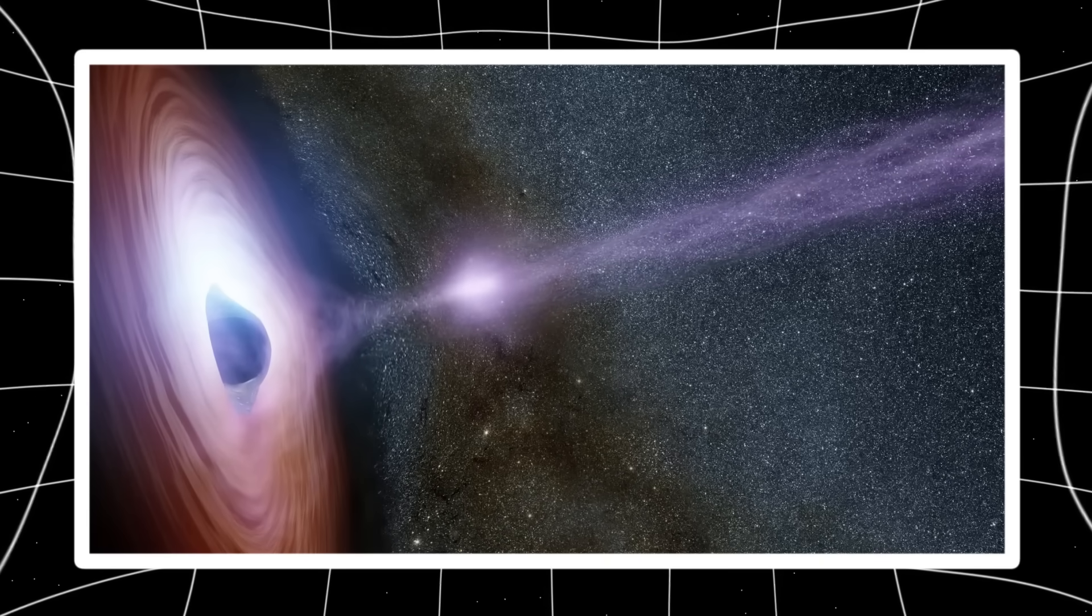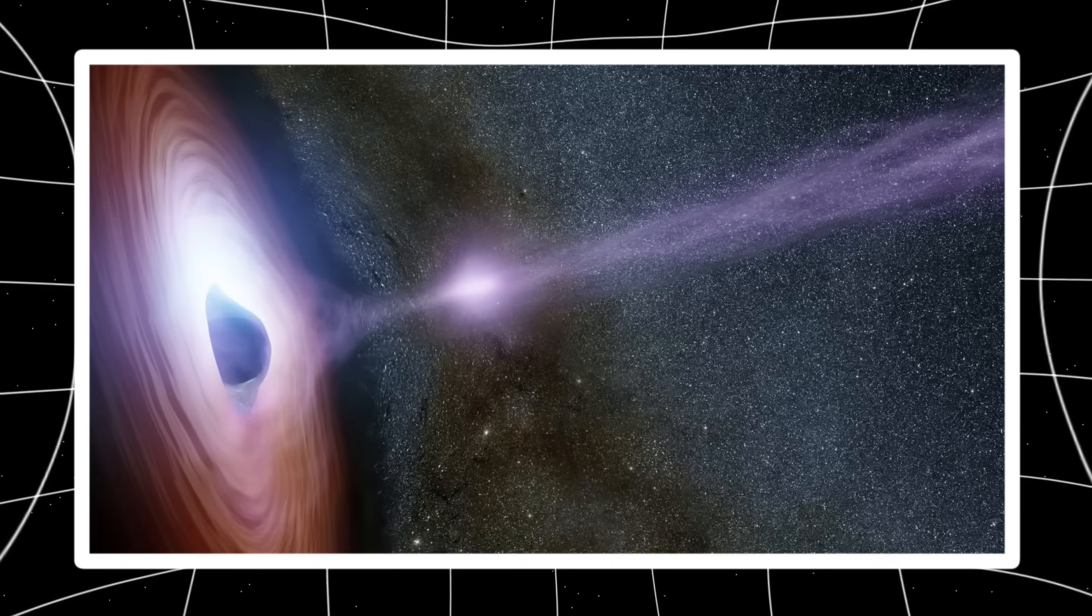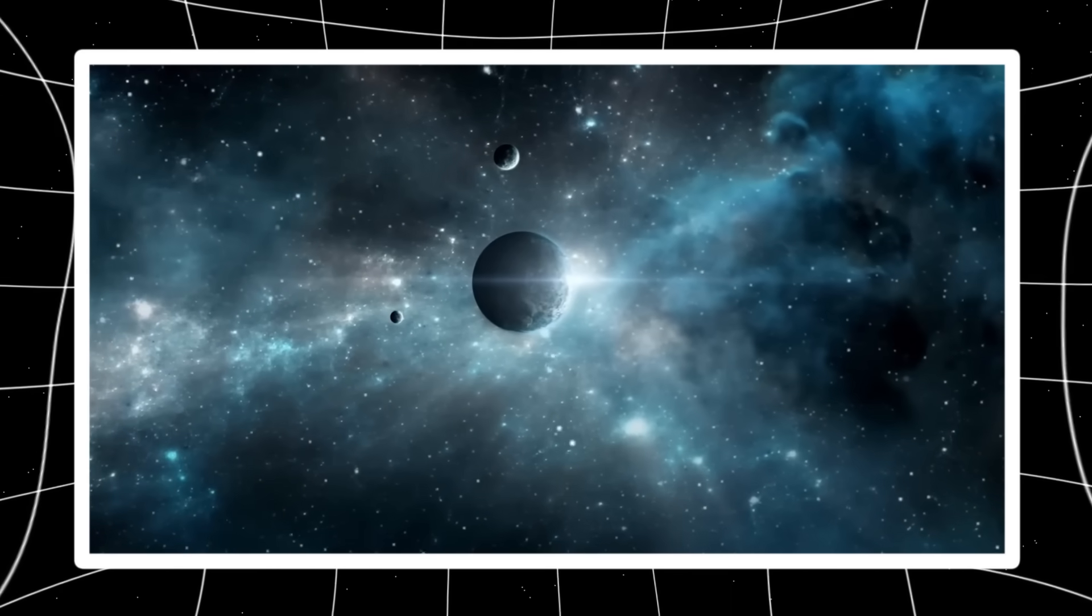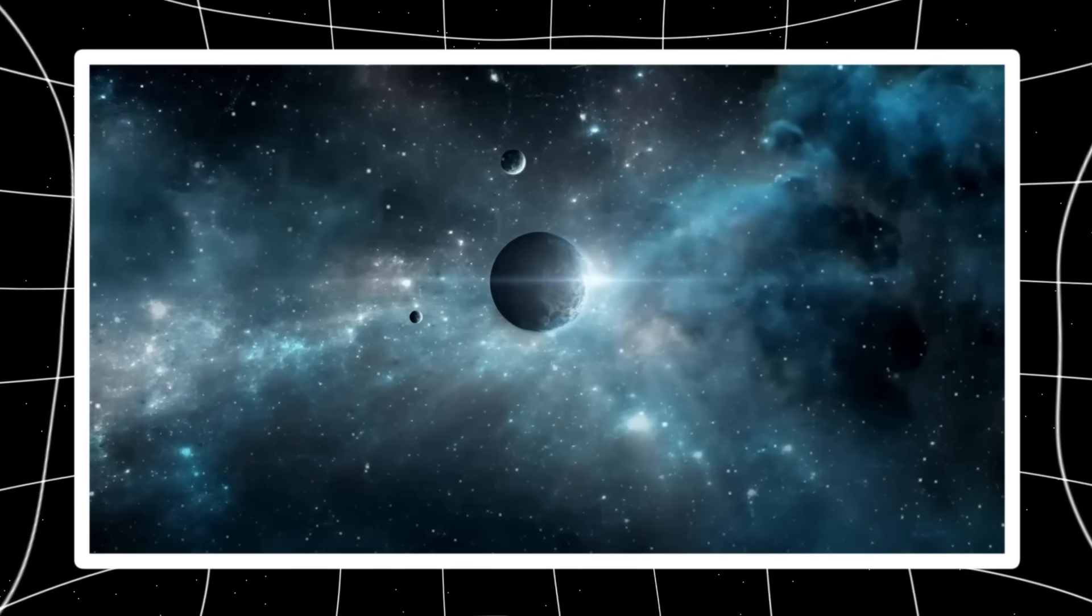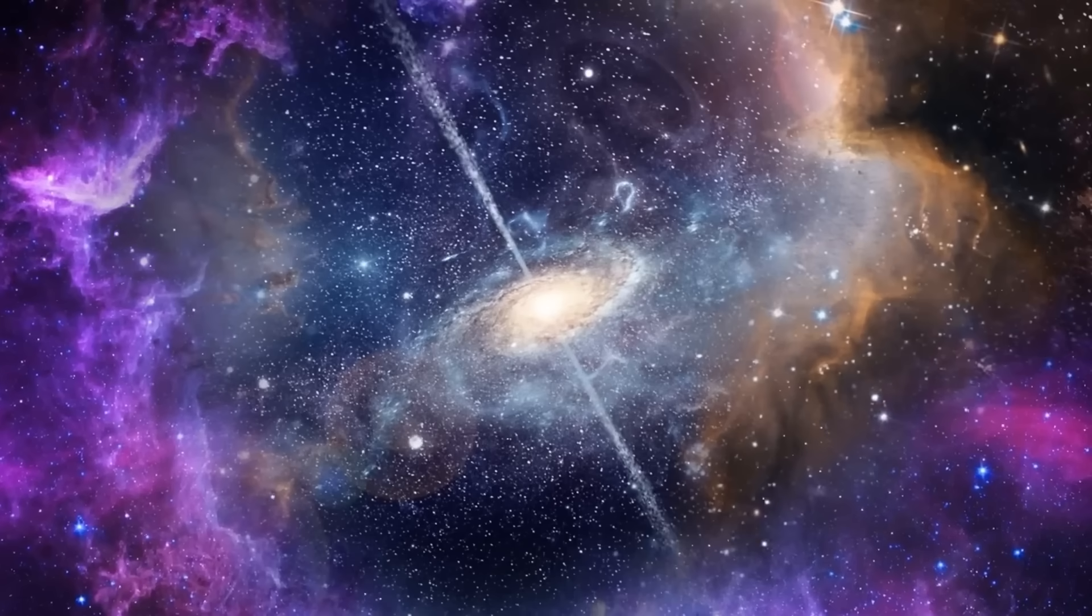That's not supposed to happen. According to our standard cosmological model, once the universe expanded after the Big Bang, galaxies should have developed in random orientations, scattered like leaves in a cosmic wind. But this wasn't random. This was rhythm, order, intention.